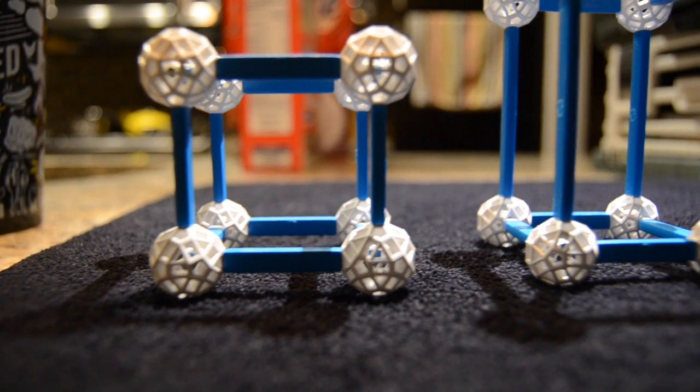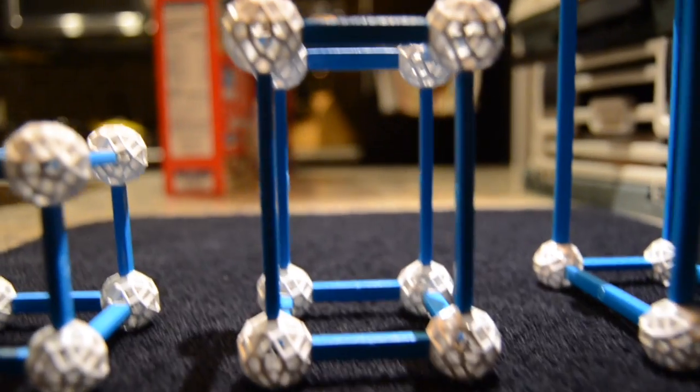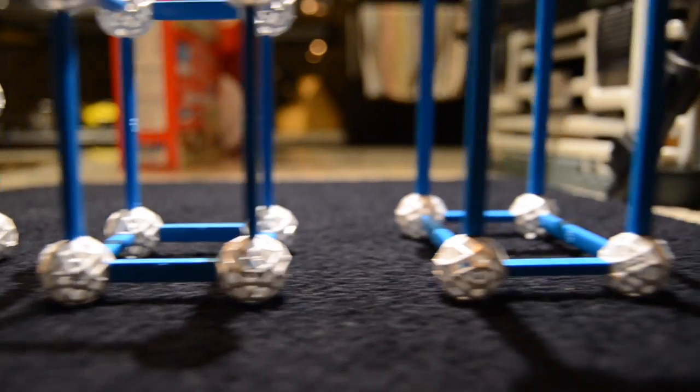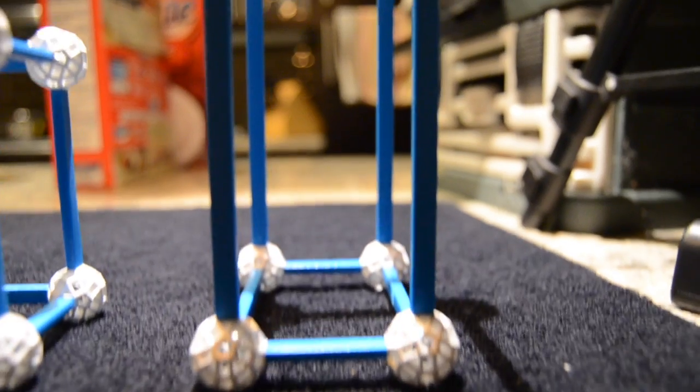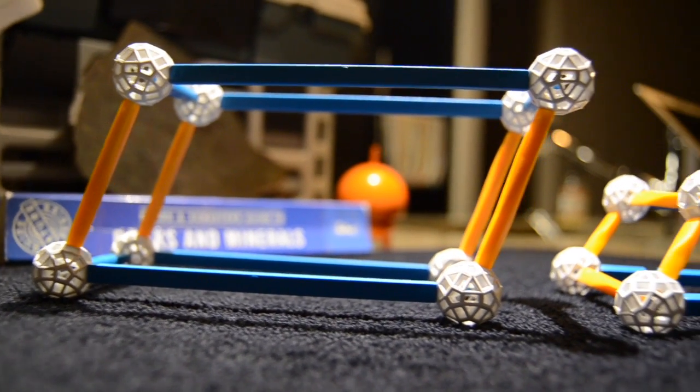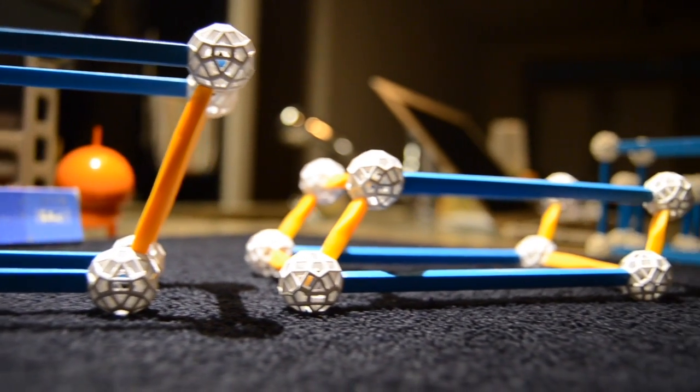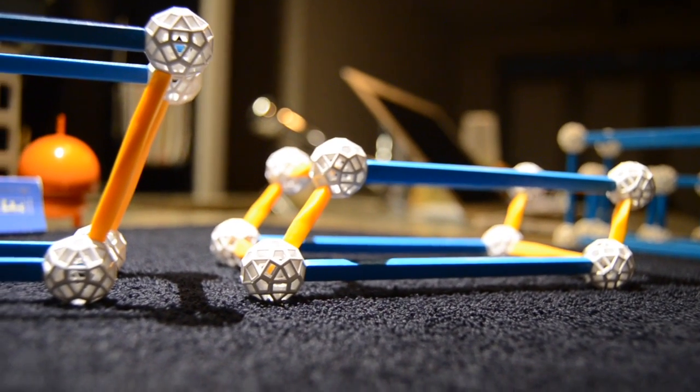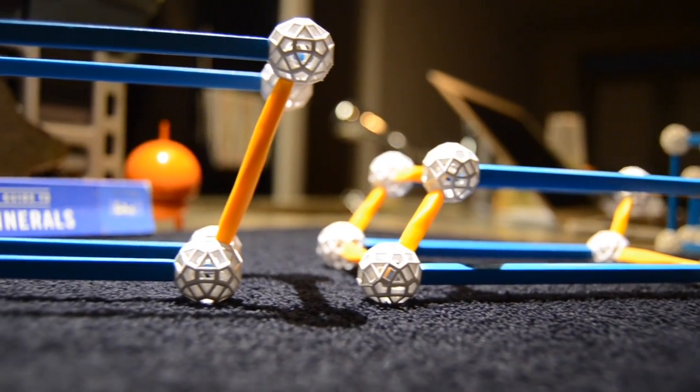So, the only thing that's changed between these three systems in symmetry is the length of the axis. The angle between them has remained the same. We started with three axes of the same length, then we changed one axis, then we changed two. Now we will make it more complicated by changing the angles.